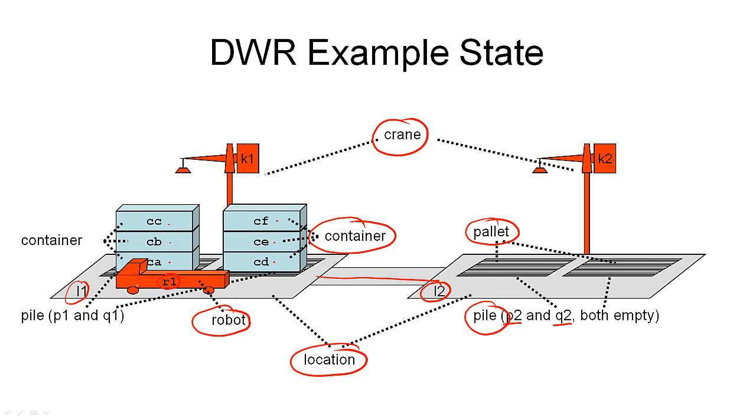Also, at each location, we can only have one robot at a time. We consider a location occupied when a robot is there. I think that's pretty much all you need to know about the world states in the dock worker robot example. But just to clarify this, not all states will have two locations and six containers and one robot. We will consider different worlds with many different numbers of robots, containers, or locations and cranes.